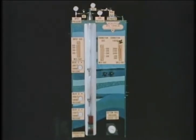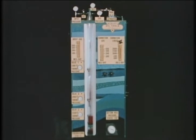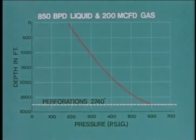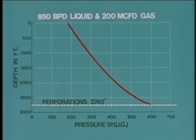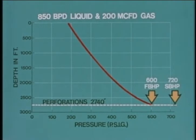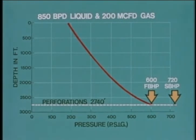And second, the flowing bottom hole pressure of 600 PSI is high enough to overcome both the weight of the fluids in the tubing column to surface and the flowing wellhead pressure of 180 PSI. Hence, the liquid and gas flow from the perforations up the tubing to the surface. The well will continue to flow so long as these conditions exist. We can plot these conditions and the red curve represents the vertical pressure gradient in this flowing well.